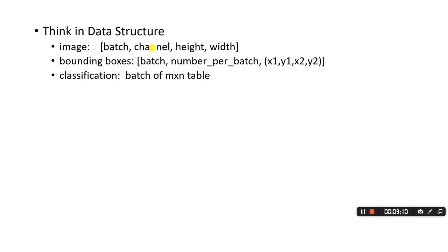When talking about classification, you should think of the values as a table. The first dimension is batch, and each image has N outputs. These N outputs are the probabilities of each class. If you have 10 class labels, then N equals 10. The entries are between 0 and 1 — just probabilities — and you pick the biggest probability as your class label prediction.